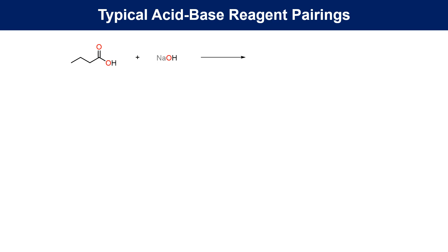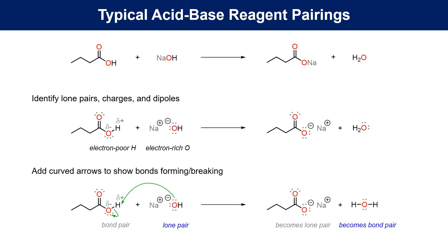To consider some examples of how to apply the curved arrows, we begin with a carboxylic acid reacting with sodium hydroxide. The products of this reaction are the sodium salt of the carboxylate anion and water. First, we need to identify dipoles and charges to work out which reactant is electron-rich and which is electron-poor. Here the hydroxide anion is rich and the proton on the carboxylic acid is poor. Then we add the curved arrows to show the electron-rich base donating to the electron-poor proton and the conjugate base breaking off to complete the conversion.